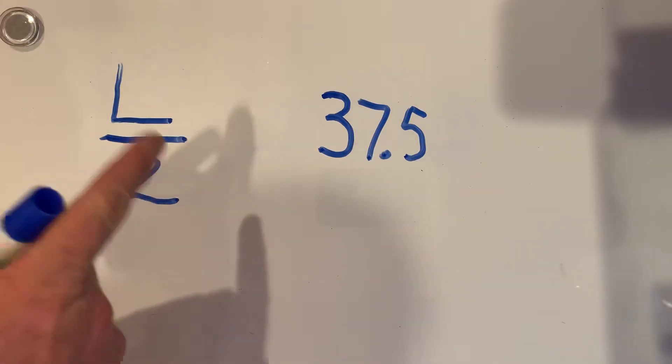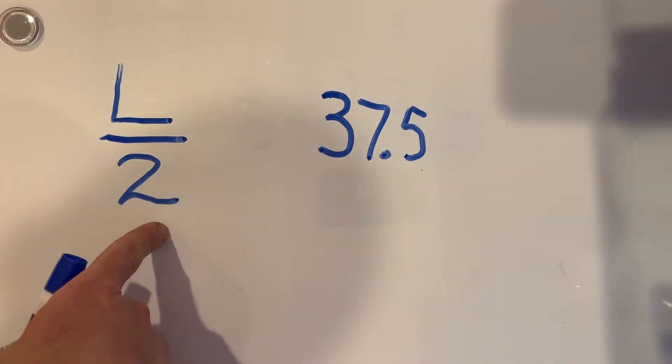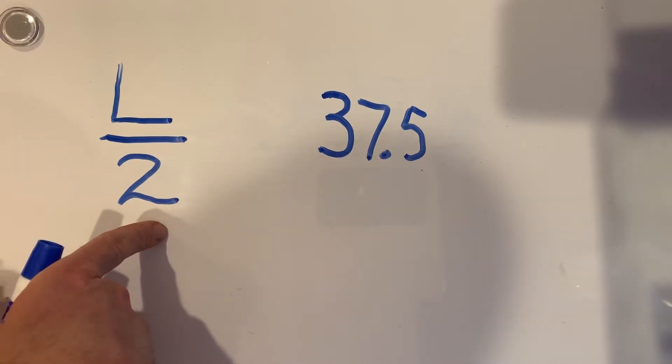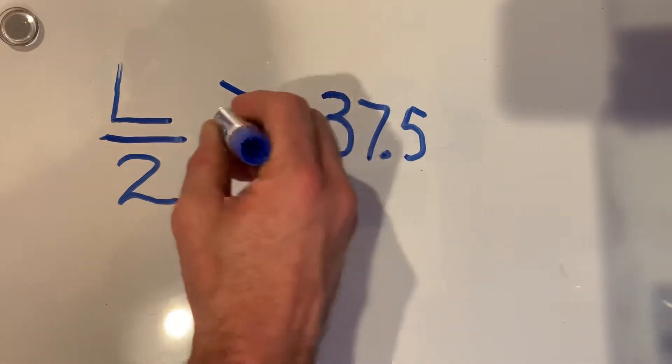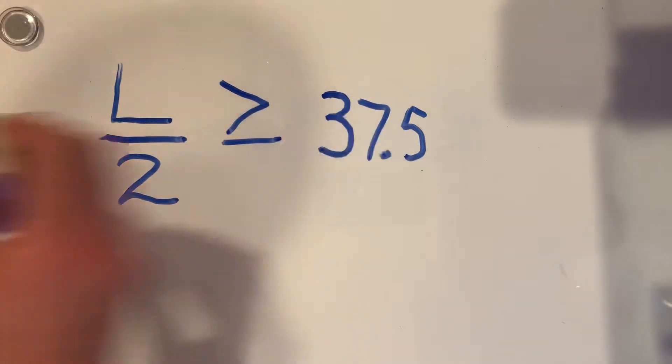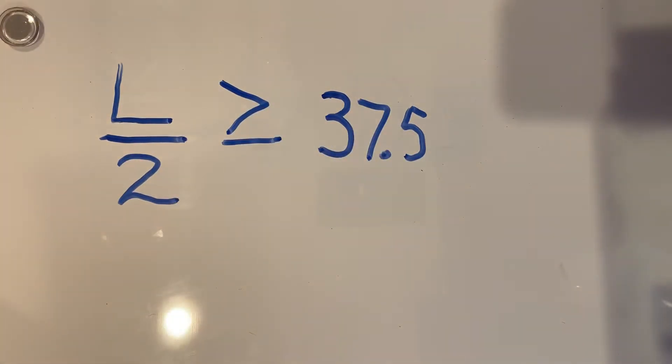So, if it has to be at least, we have to think about what that means. That means it can't be any less than 37 and a half inches. It can't be shorter than that. So that means it has to be greater than, but it also can be equal to. So it has to be greater than or equal to.